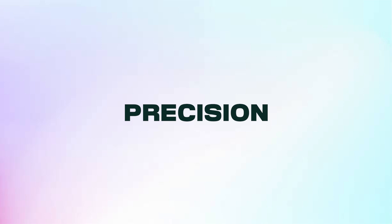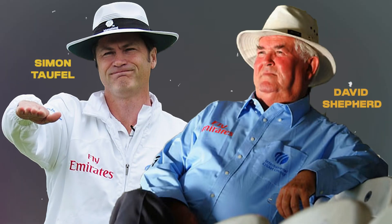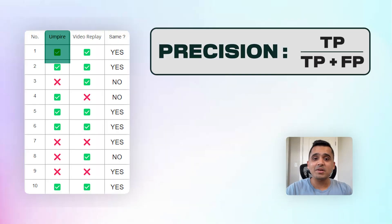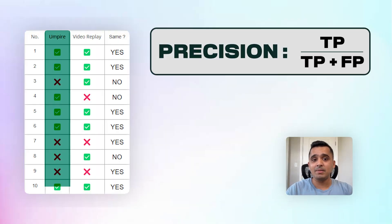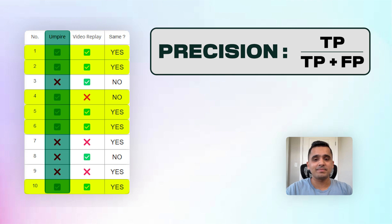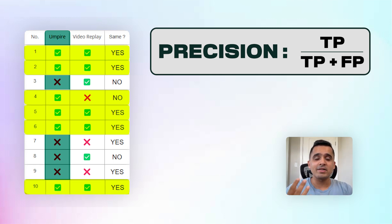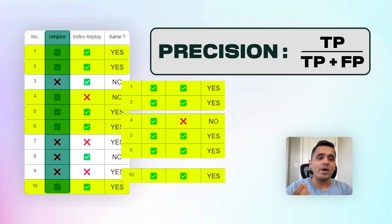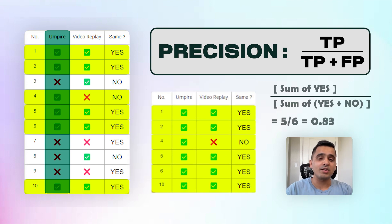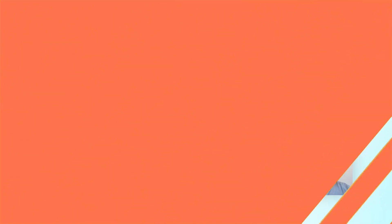For precision, imagine you have an umpire known for their meticulous LBW decisions. Every time this umpire gives an LBW, the ball was indeed going to hit the stumps. So precision evaluates the umpire's calls to confirm that when they shout that you are out, they're confident about their decision.